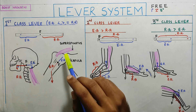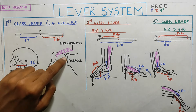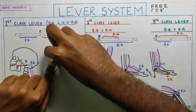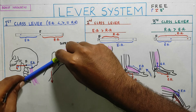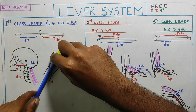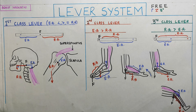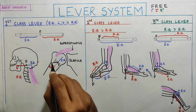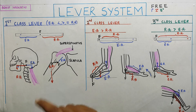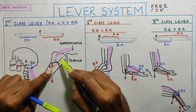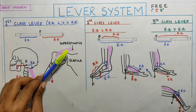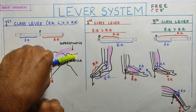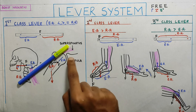Another example of a first class lever is the supraspinatus acting at the shoulder joint. At the shoulder, the humerus moves around an axis and abduction is caused. Gravity pulls the humerus downward — that is the resistance arm, measured as the perpendicular distance from the axis. The supraspinatus acts on top, causing abduction against gravity's adduction force. Fulcrum is in the center, confirming a first class lever at the shoulder joint.